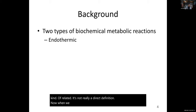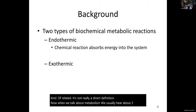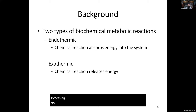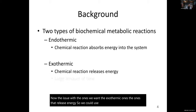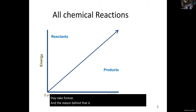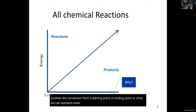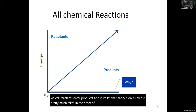When we talk about metabolism, we usually hear about two types of reactions: ones that take in energy to work, and ones that release energy. We want the exothermic ones — the ones that release energy so we can use it. The problem is that they take forever. Any reaction involves the conversion from reactants into products, and if we let that happen on its own, it takes thousands and thousands of years to do so.